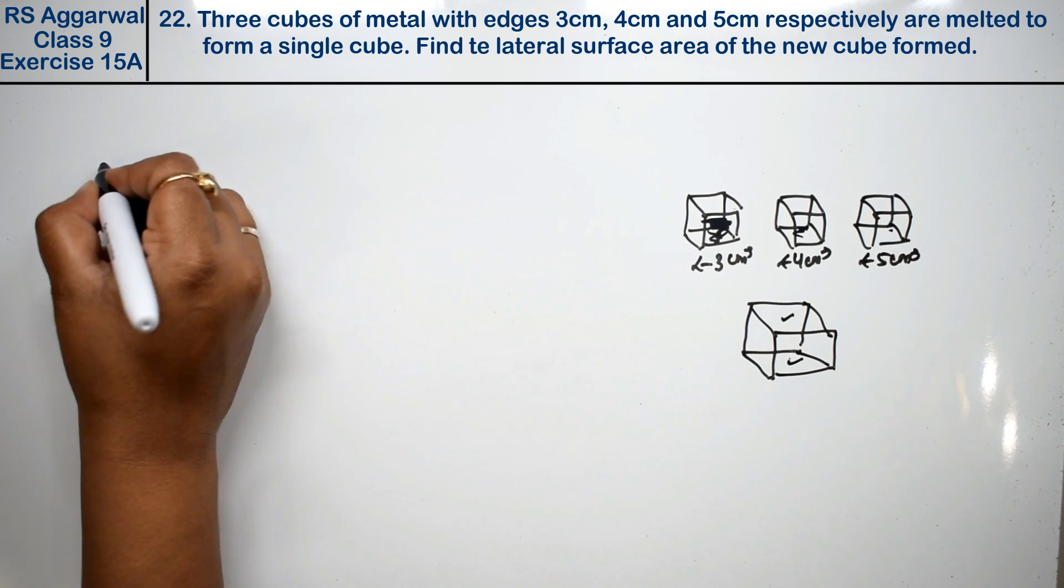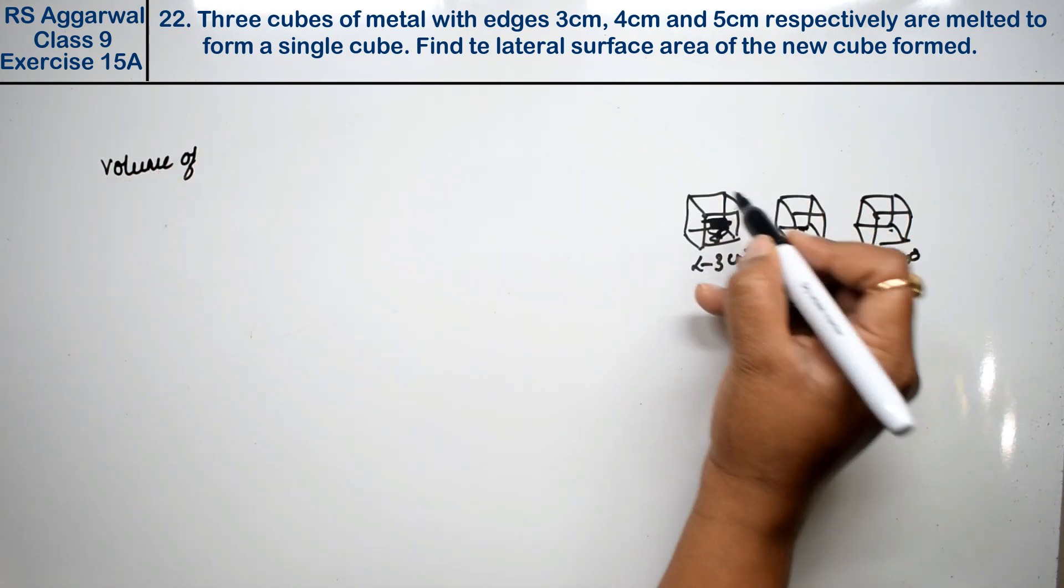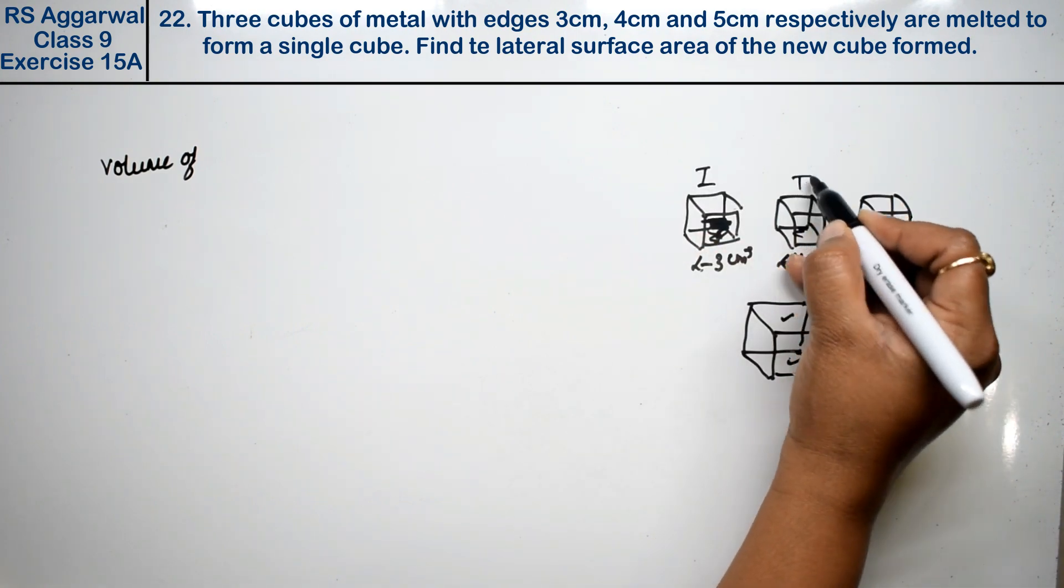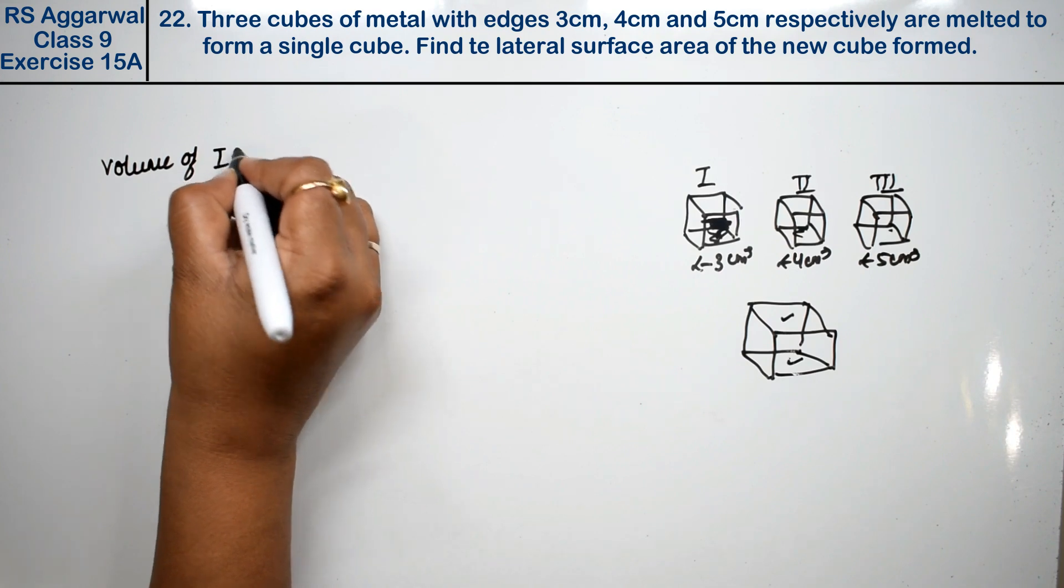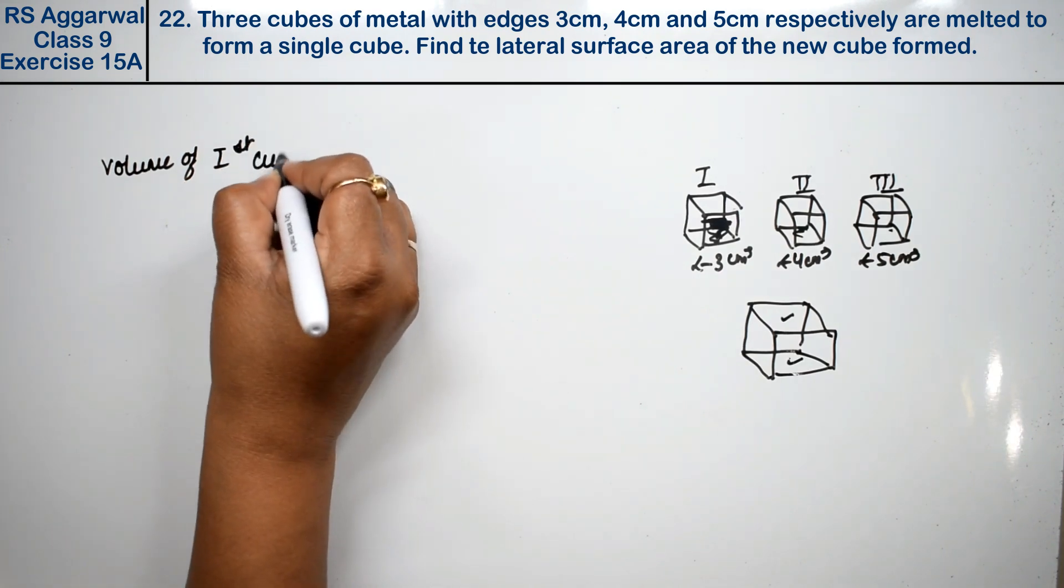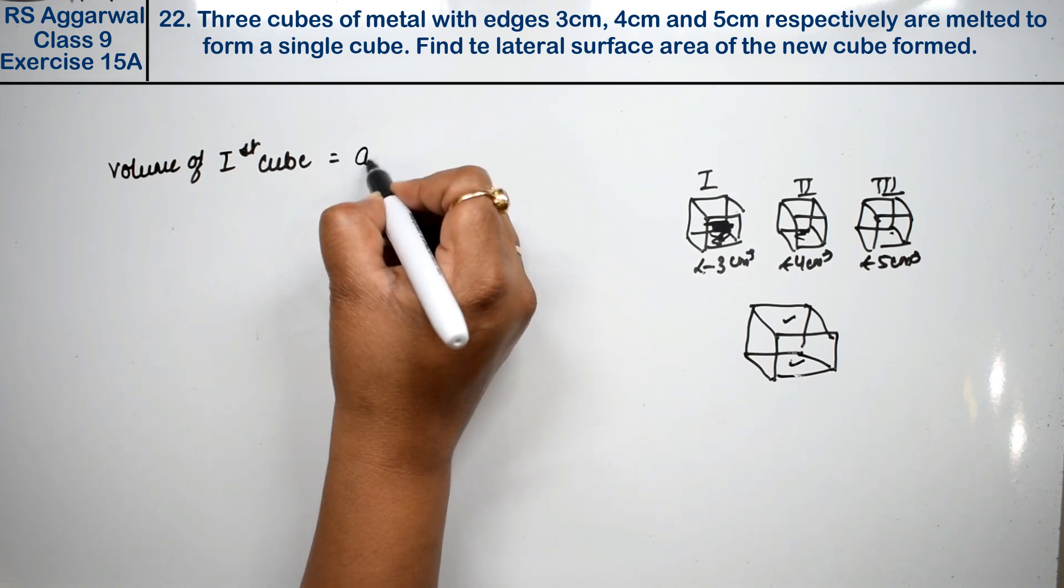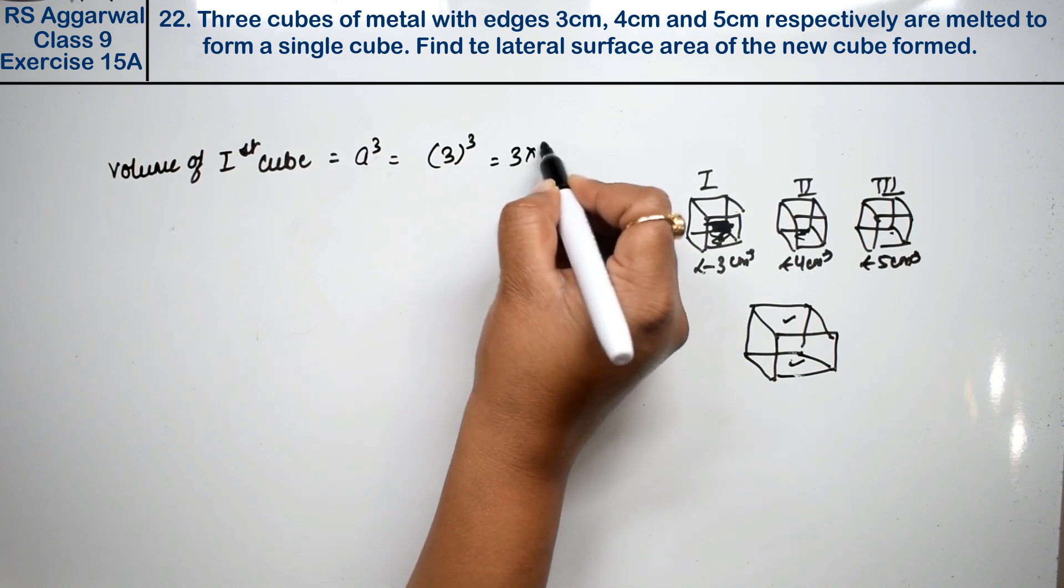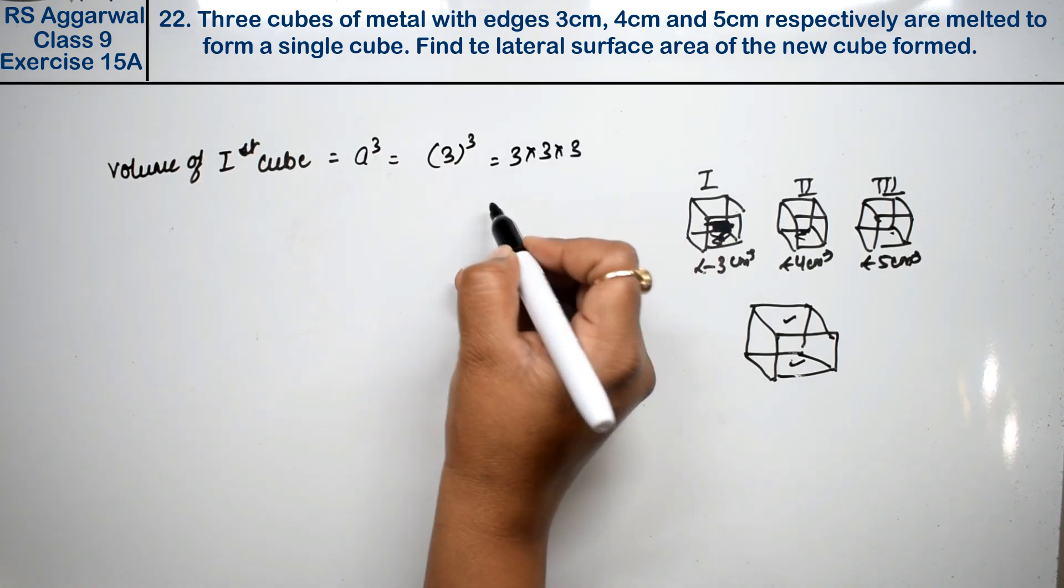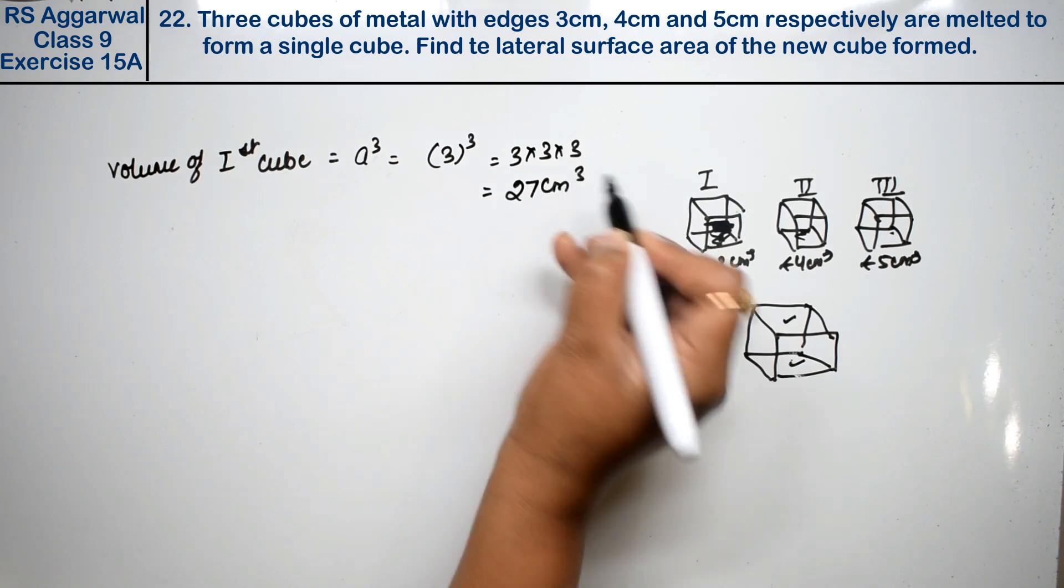So volume of the first cube, that means 3 cubed or we can say 3 into 3 into 3, that is 27 cm cube.